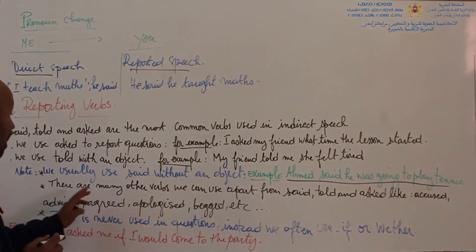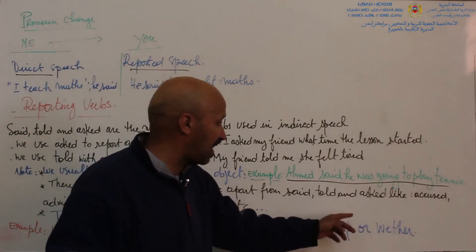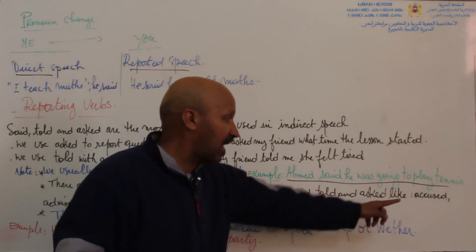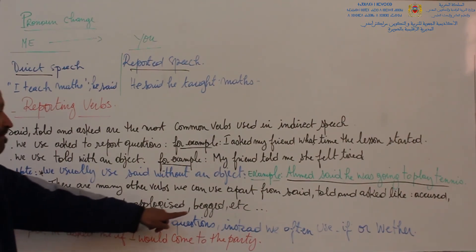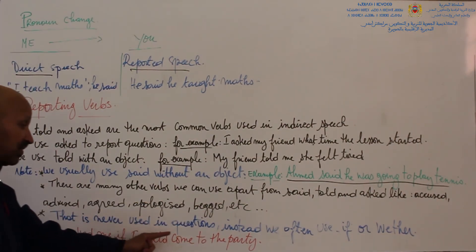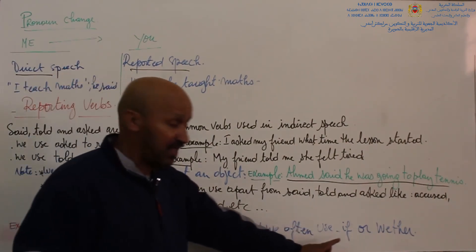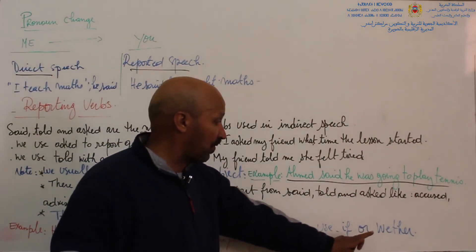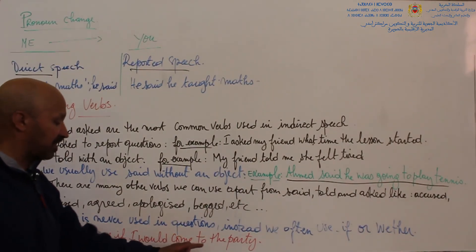There are many other verbs we can use apart from 'said', 'told', and 'asked', like accused, advised, agreed, apologized, and begged. Note that 'that' is never used in questions. Instead, we often use 'if' or 'whether'. For example, he asked me if I would come to the party.